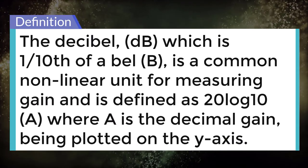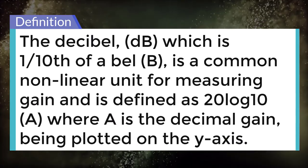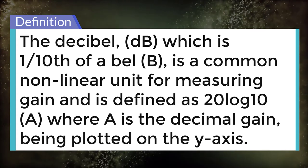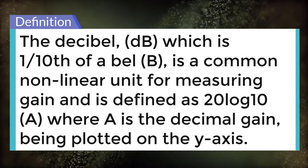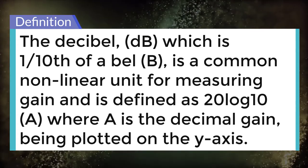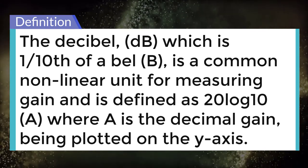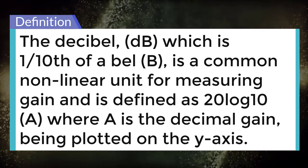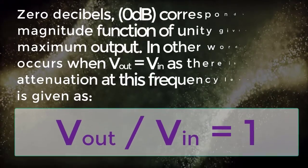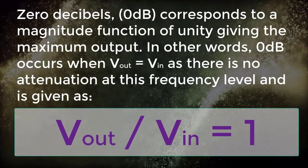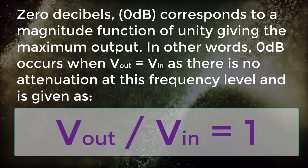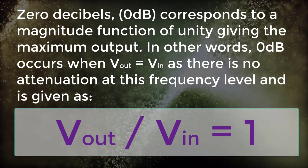The decibel dB, which is 1 by 10th of a bell, is a common non-linear unit for measuring gain and is defined as 20 log 10 A where A is the decimal gain. Being plotted on the y-axis, 0 dB corresponds to a magnitude function of unity giving the maximum output.